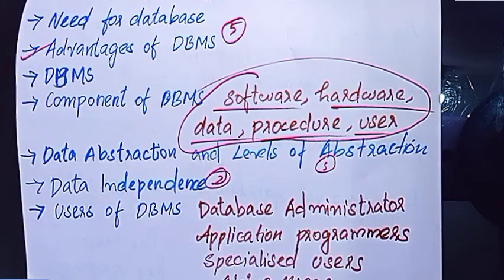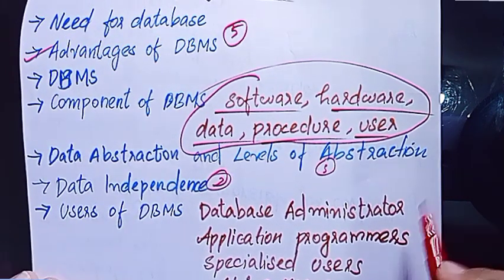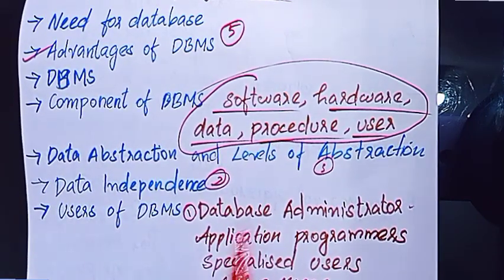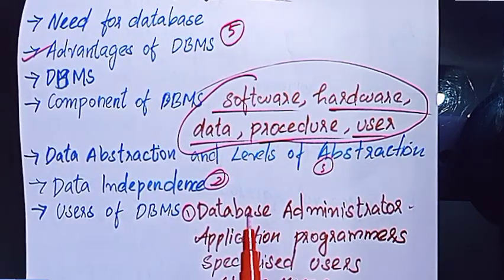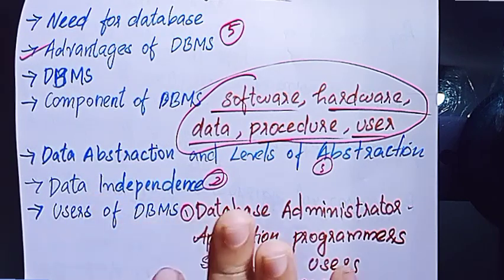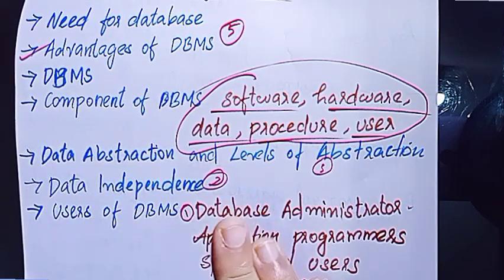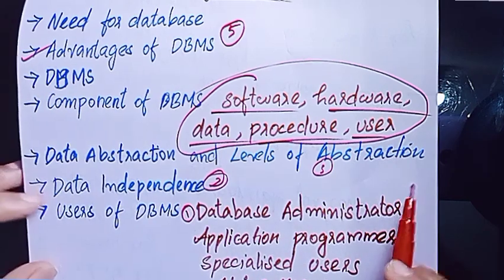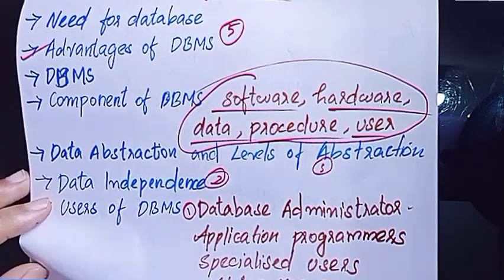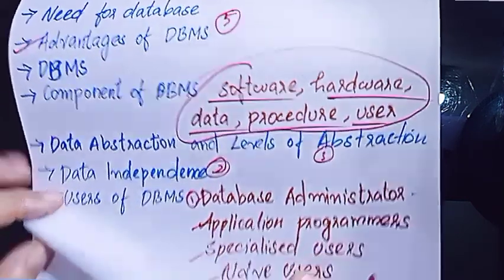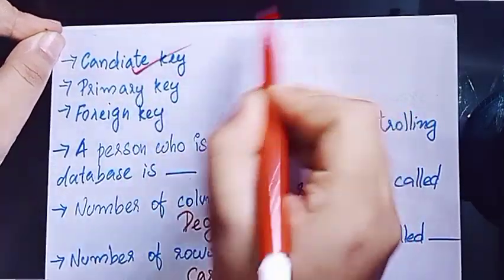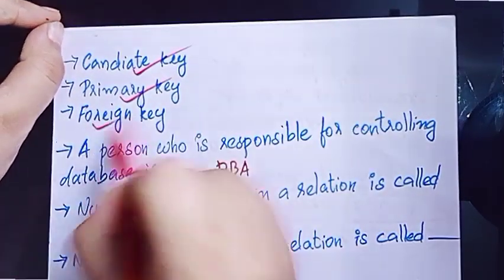Then in the next section, Users of DBMS. If you want to study an explanation, it will be necessary to study it. The users include the database administrator, application programs, specialized users, and native users. Next is the candidate key and primary key.